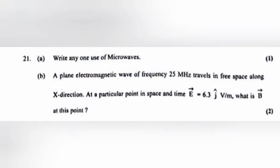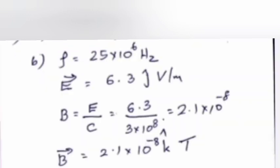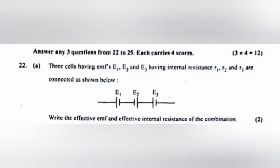Question 21b: A plane electromagnetic wave of frequency 25 MHz travels in free space along the x-direction. At a particular point in space and time, E = 6.3 J V/m. What is B at this point?